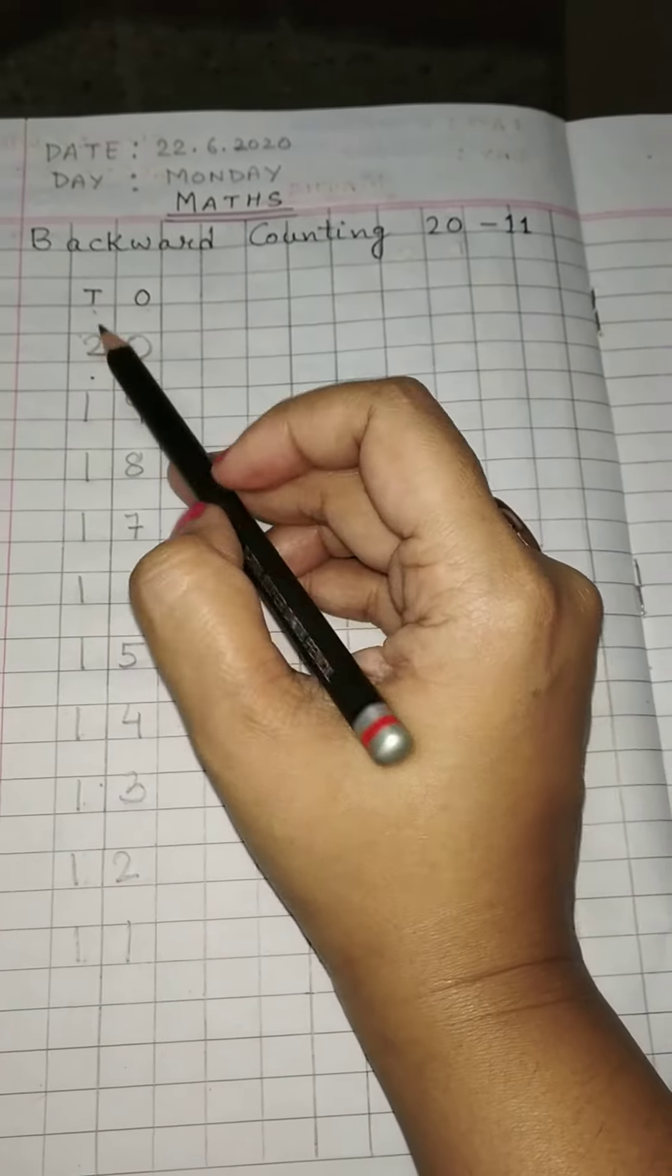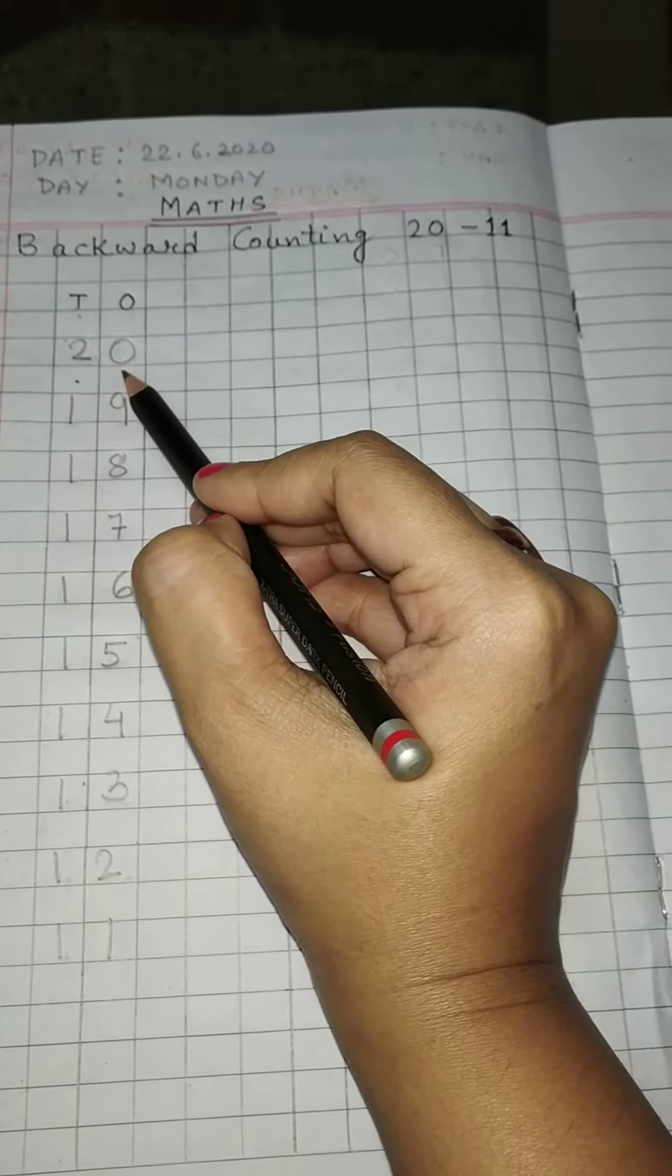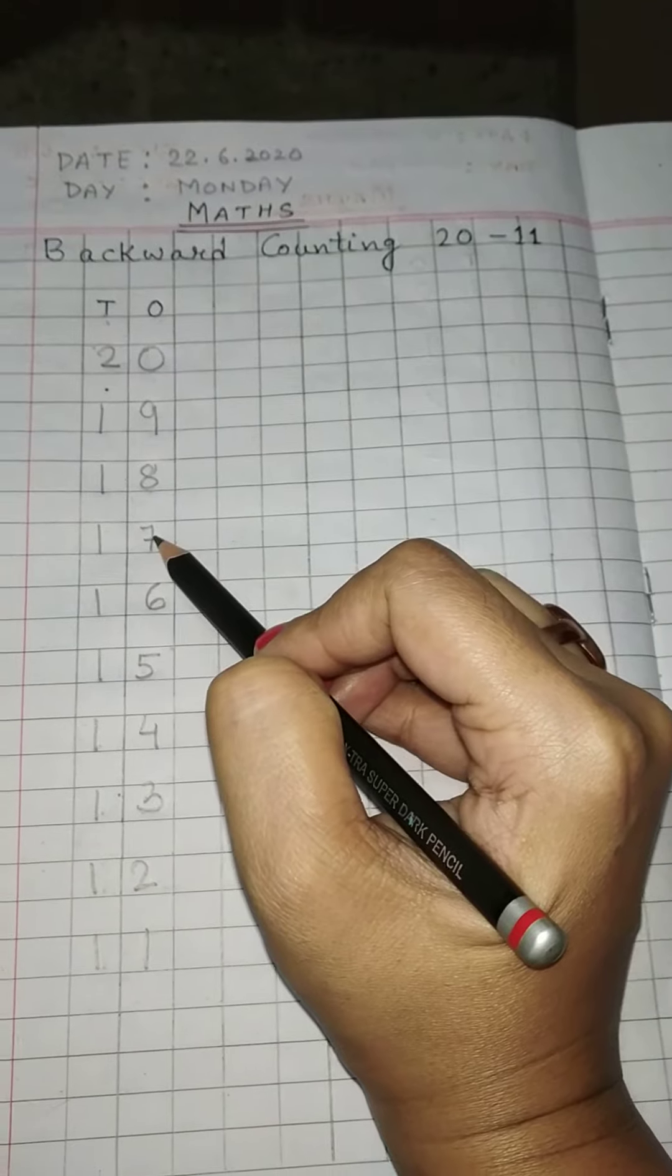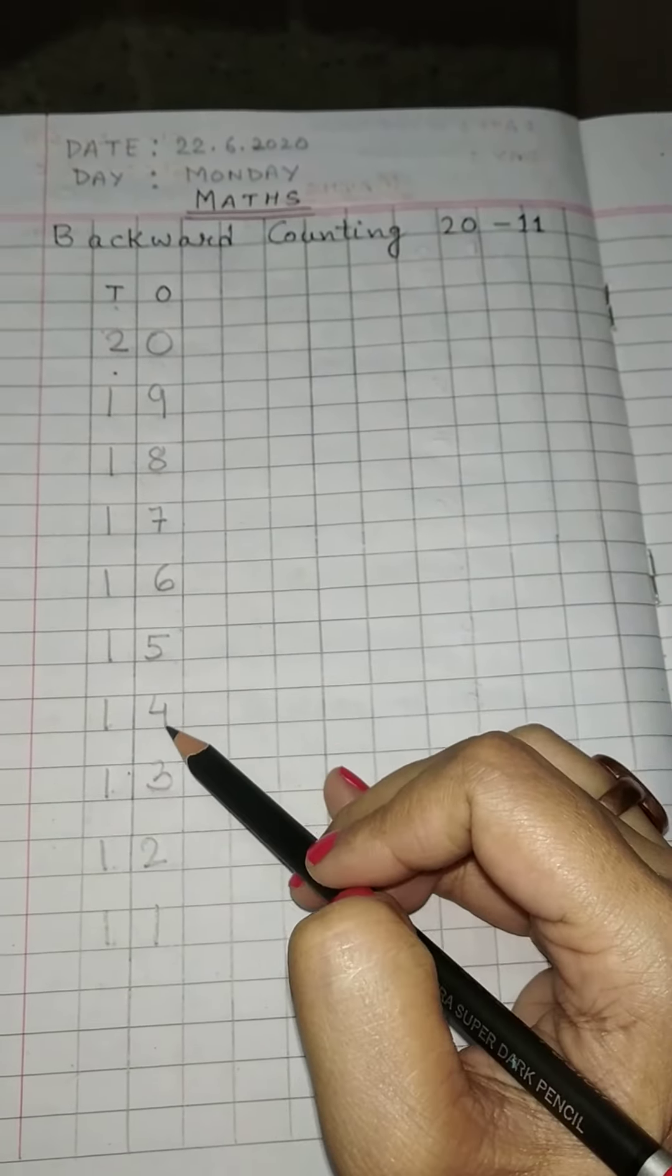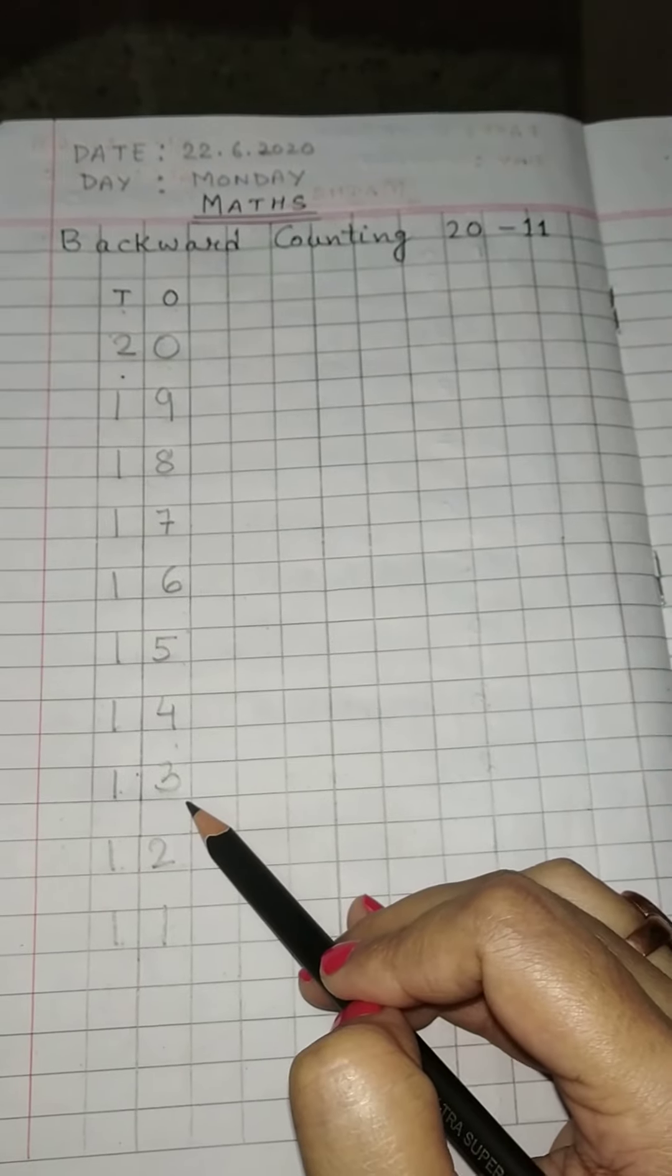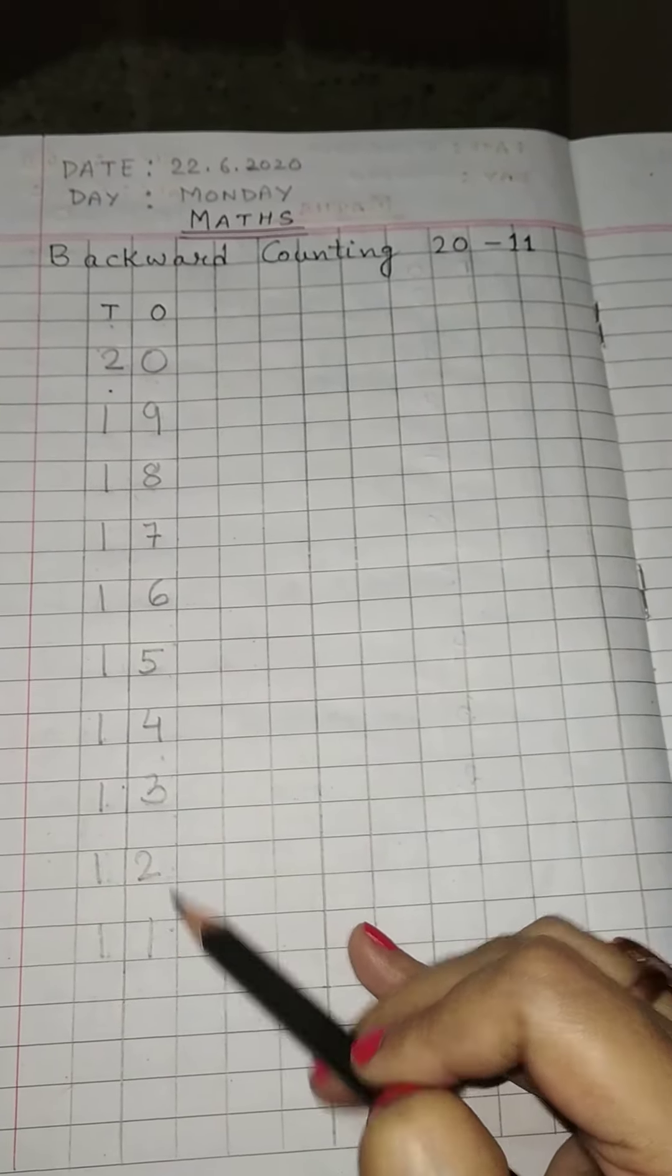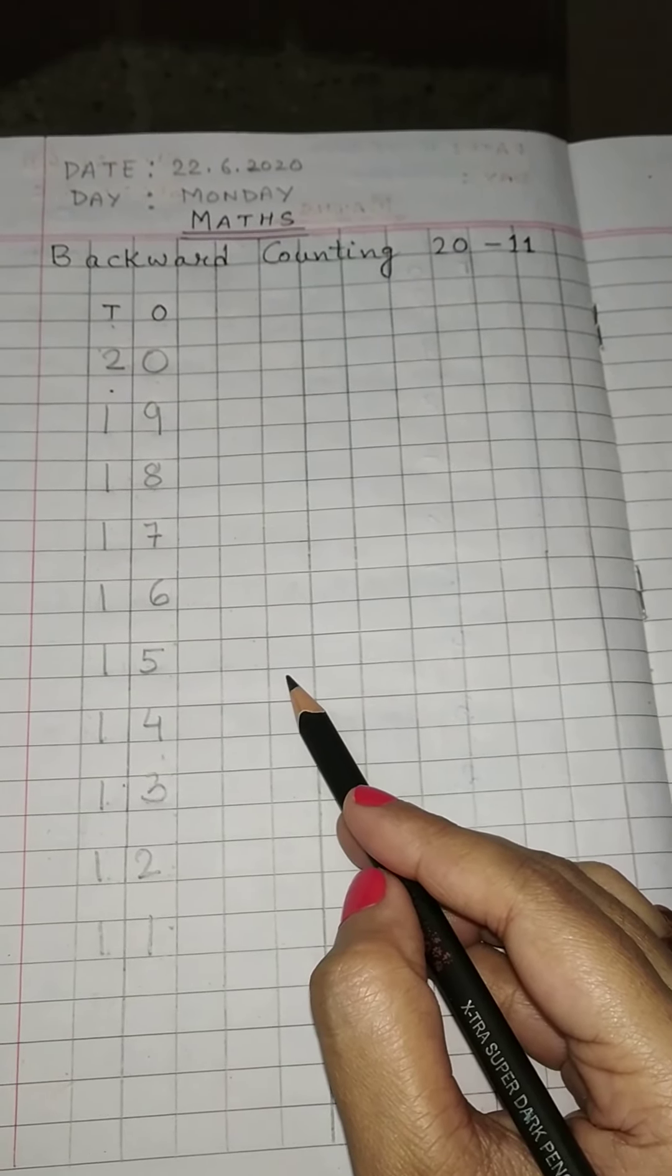again. Tens, ones: 20, 19, 18, 17, 16, 15, 14, 13, 12, and 11. Now like this way you will learn the same. Thank you.